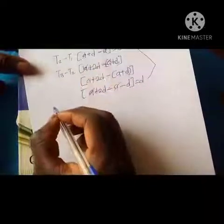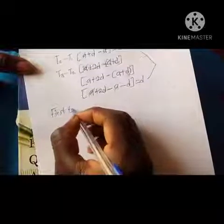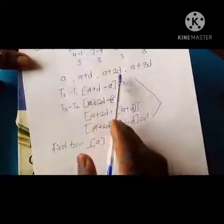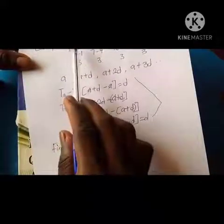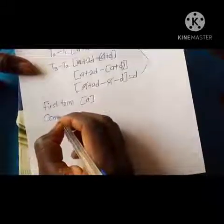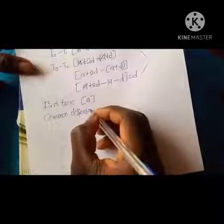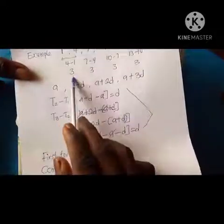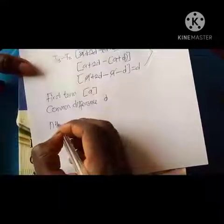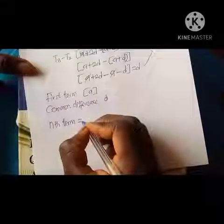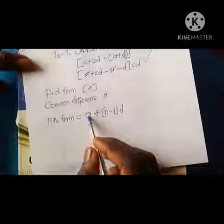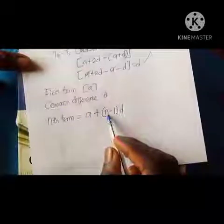The key things we need in an AP: the first term, which is a — in the sequence 1, 4, 7... the first term is 1. The common difference is d. And the nth term formula is: T(n) = a + (n−1)d, where a is the first term, d is the common difference, and n is the term number.